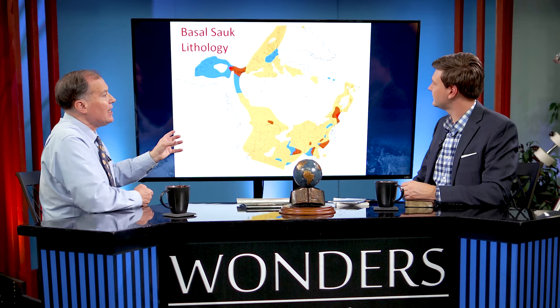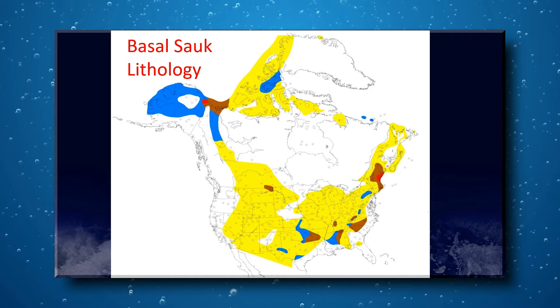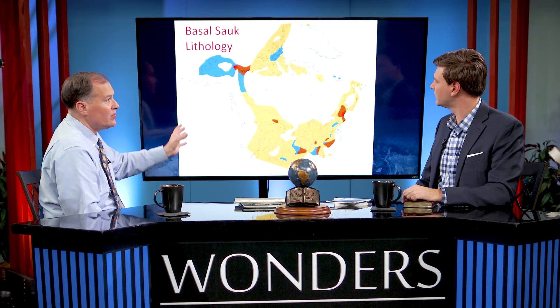And so you see this yellow is one continuous blanket sand. Blanket sands are a mystery today in terms of what they explain. How do you get a sand that covers that much area — one layer? This is compelling because it's so massive; it covered such a large area. This is not a trivial thing. And again, secular scientists can't explain these types of features.